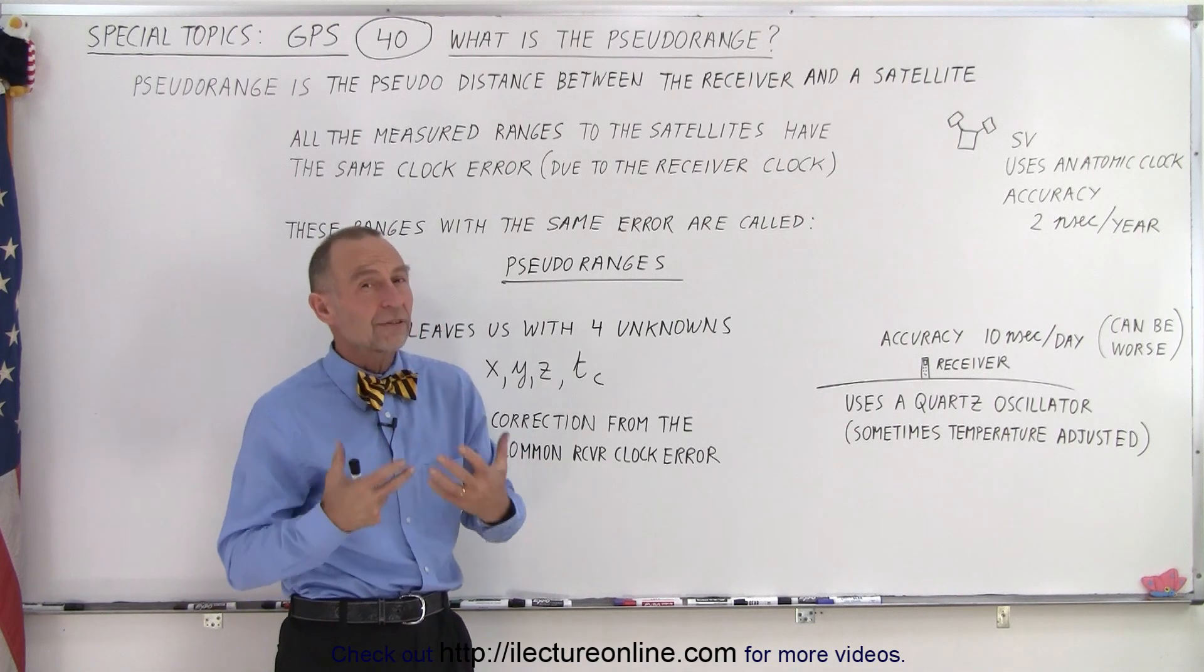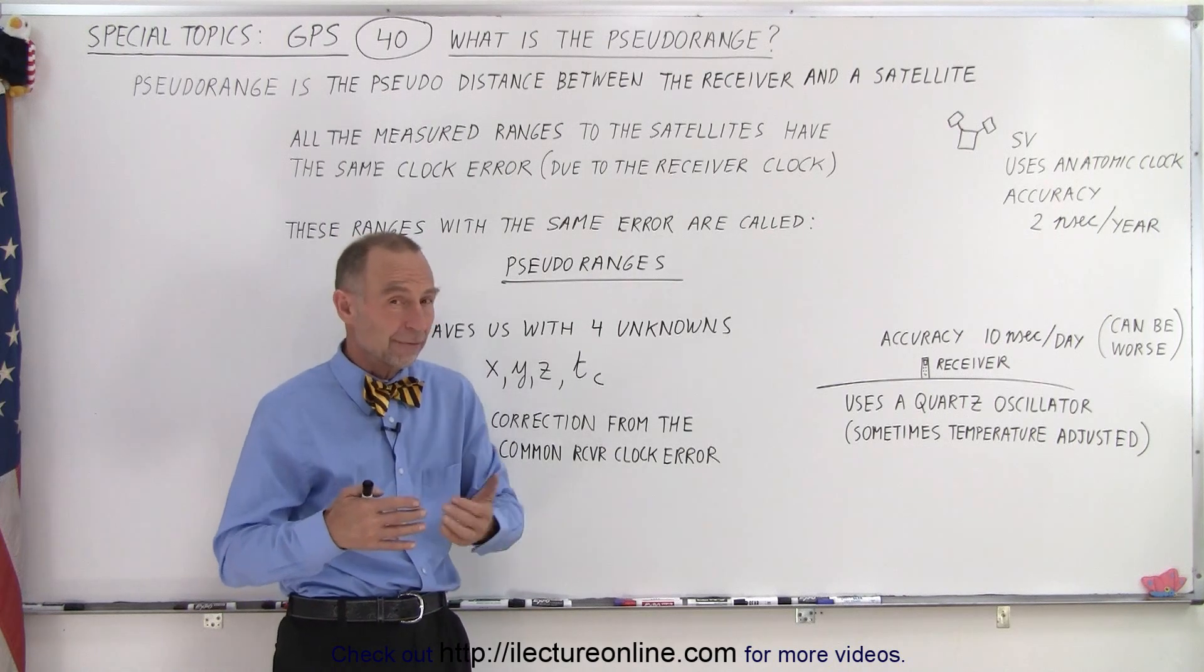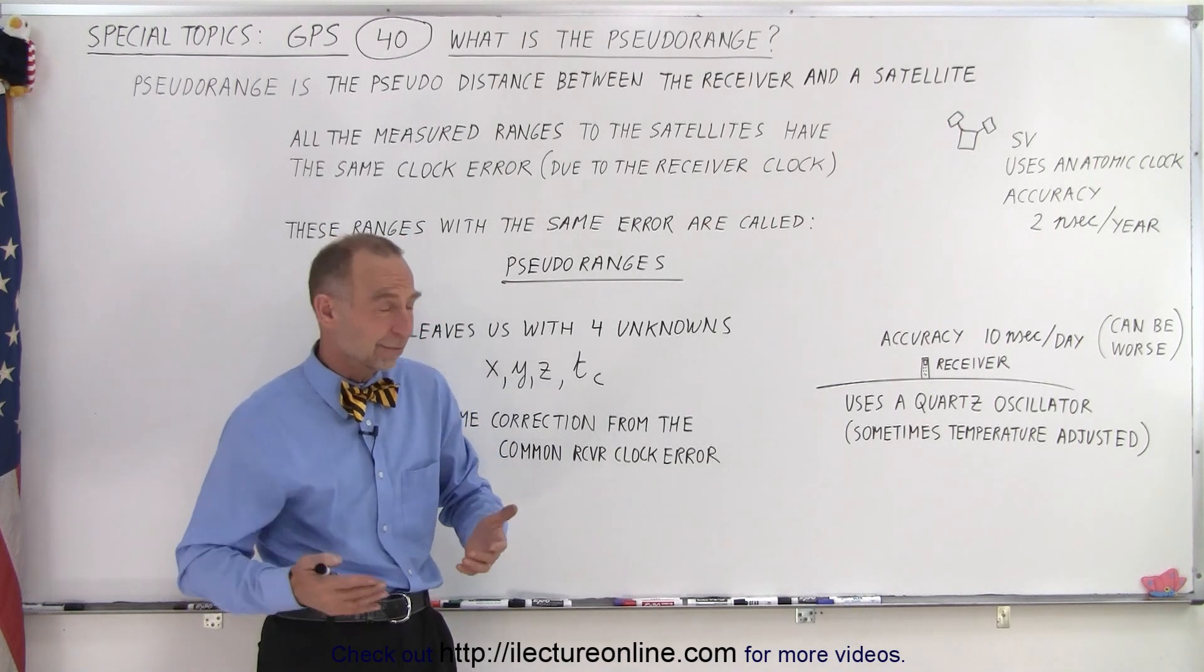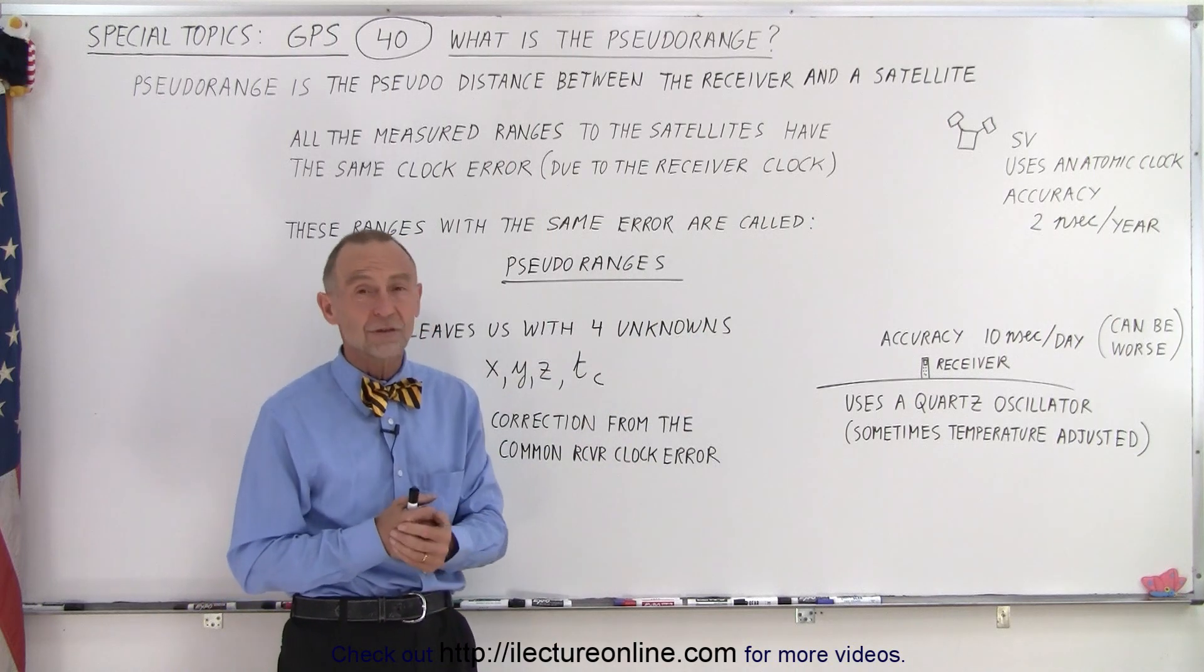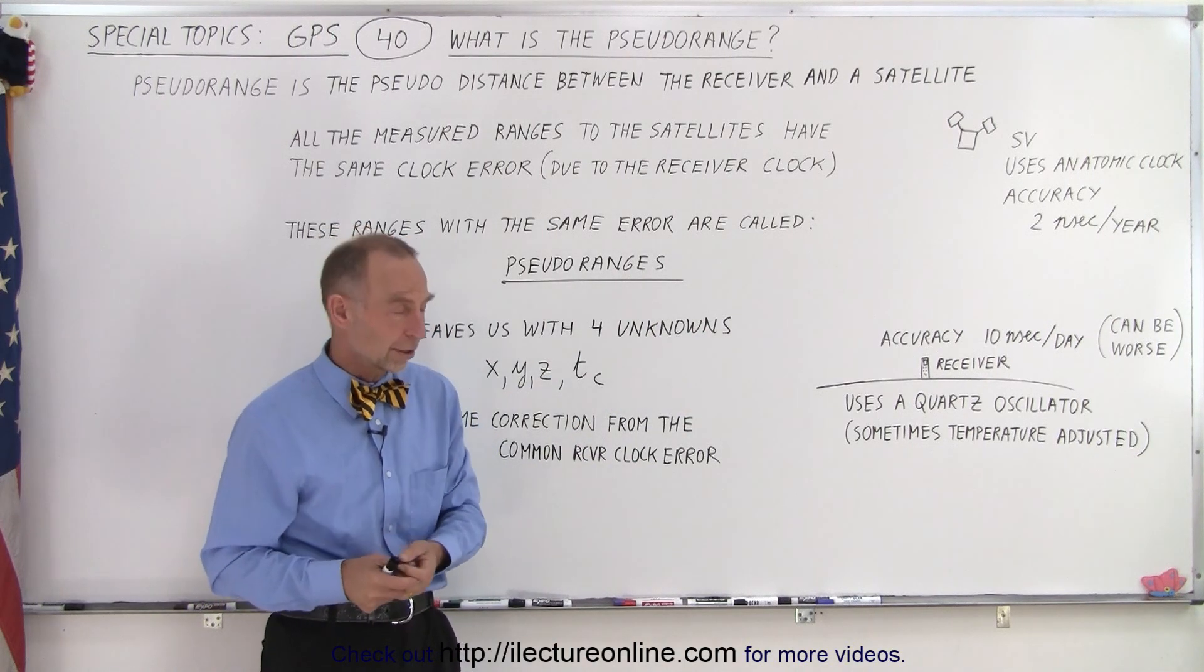But definitely the receiver clock is going to be off, and for every nanosecond you're off by a foot. 10 nanoseconds is 10 feet, and in some cases the accuracy is far less than that, so therefore you can have much larger errors.